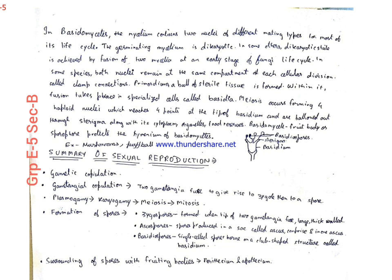The Basidiomycetes fruiting body protects the hymenium of Basidiomycetes. Here is the basidium. In singular it is called basidium. This is the basidial cell. The upper four dots are the basidiospores and the small line that is the outgrowth is known as sterigmata.